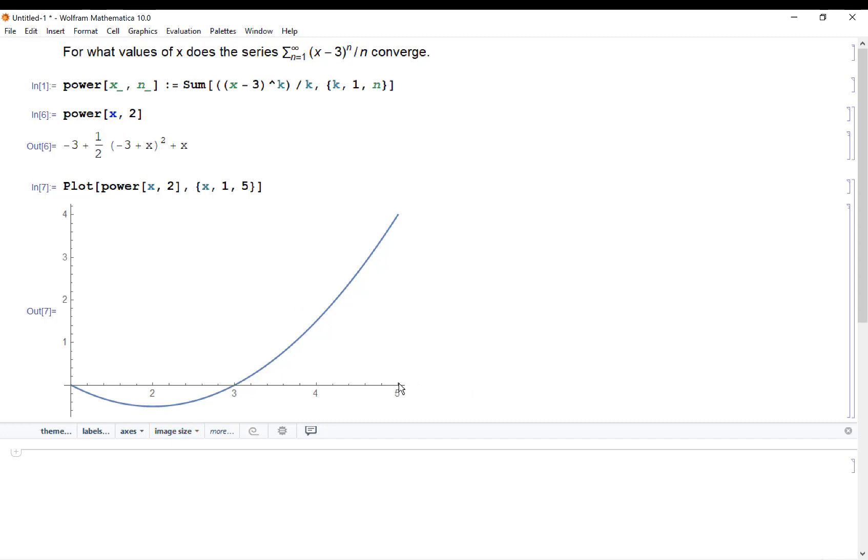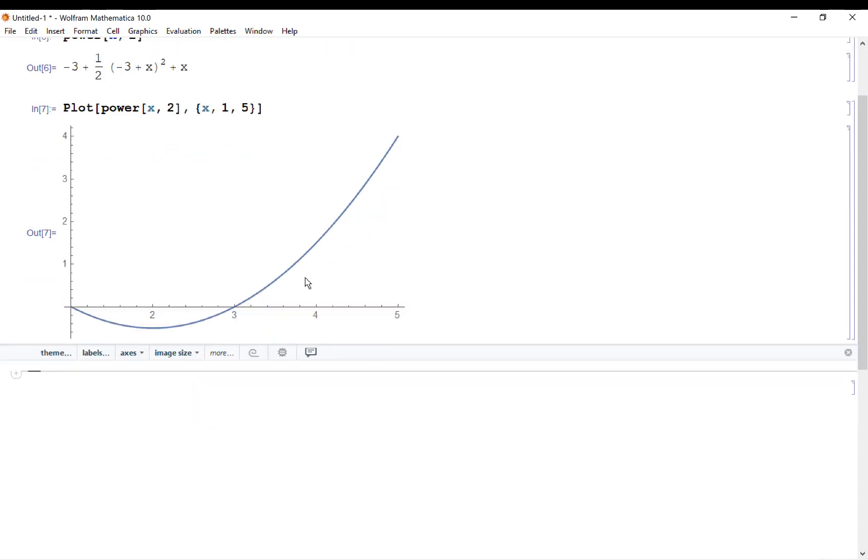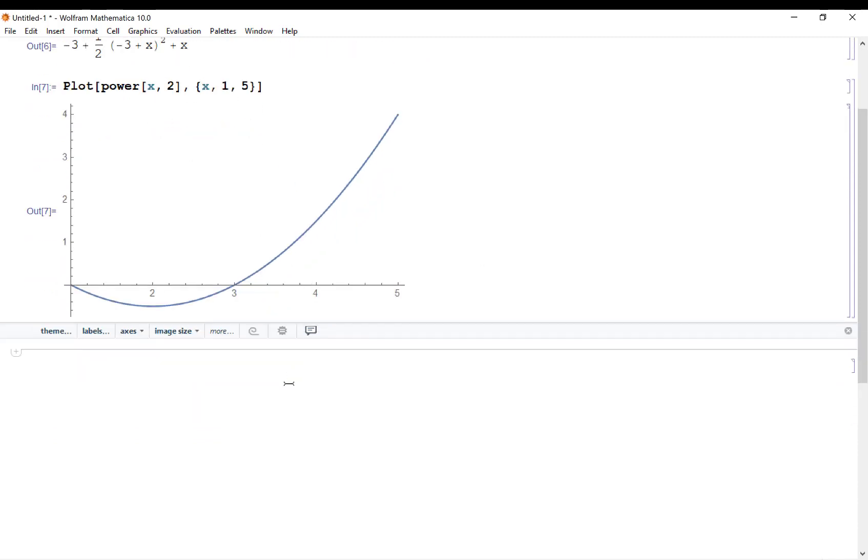So notice if I go out towards infinity, x goes out to infinity, this thing blows up. But what happens for all the different values of n? And that's kind of confusing to think about.